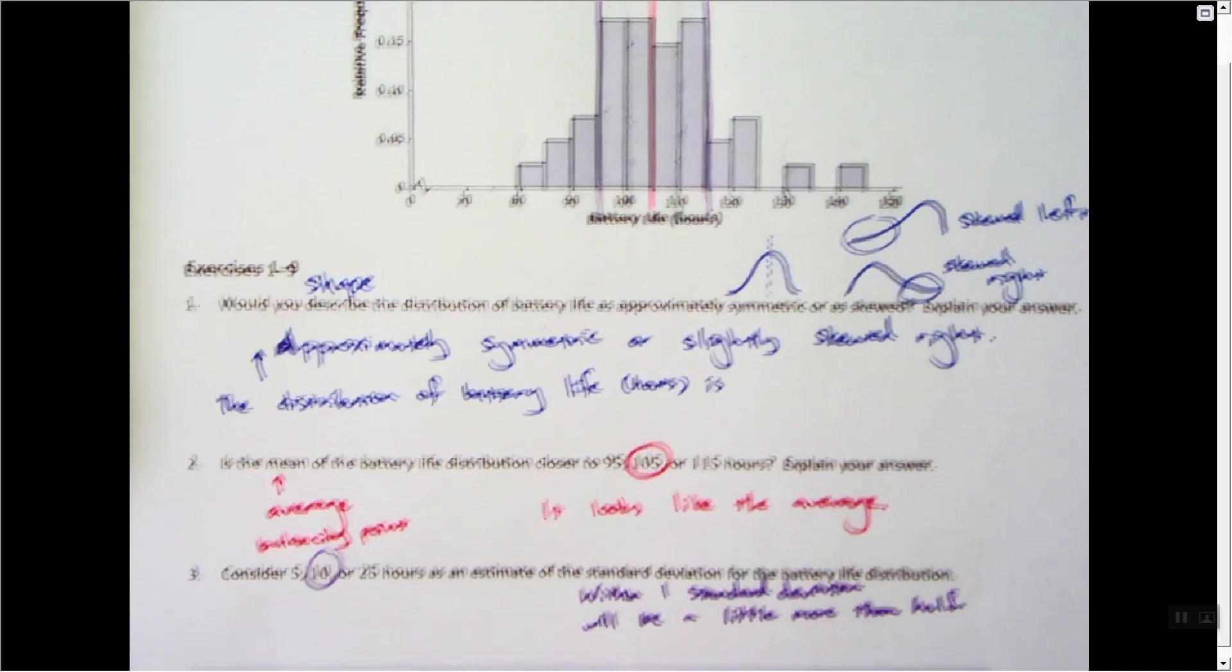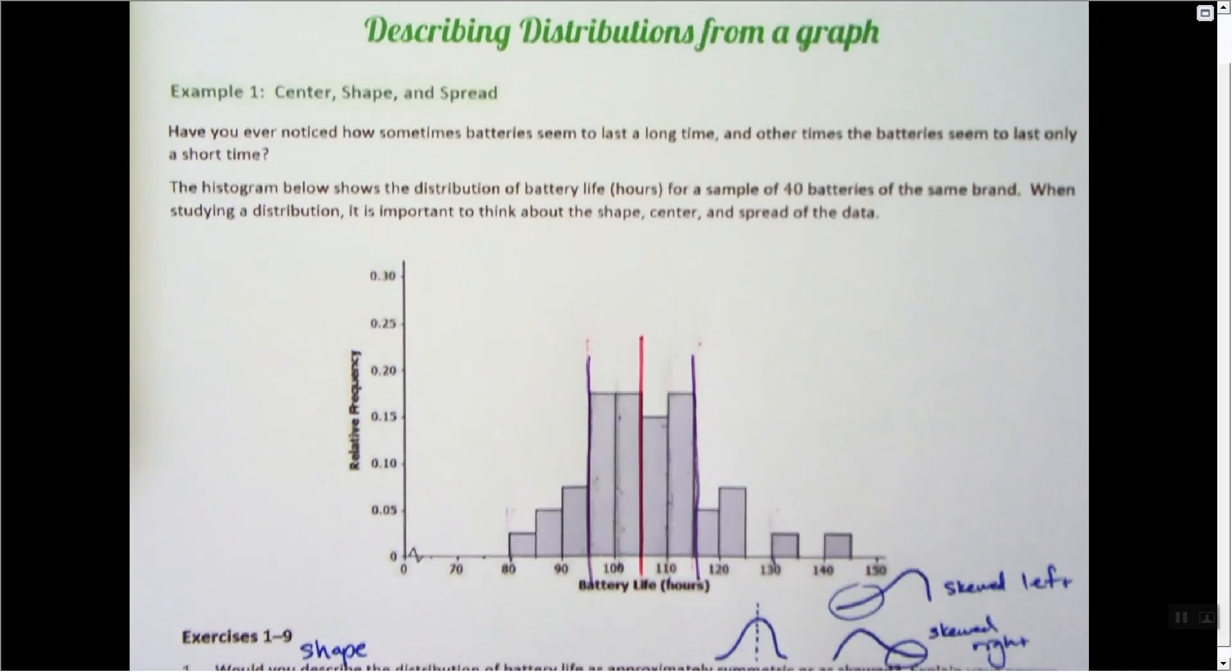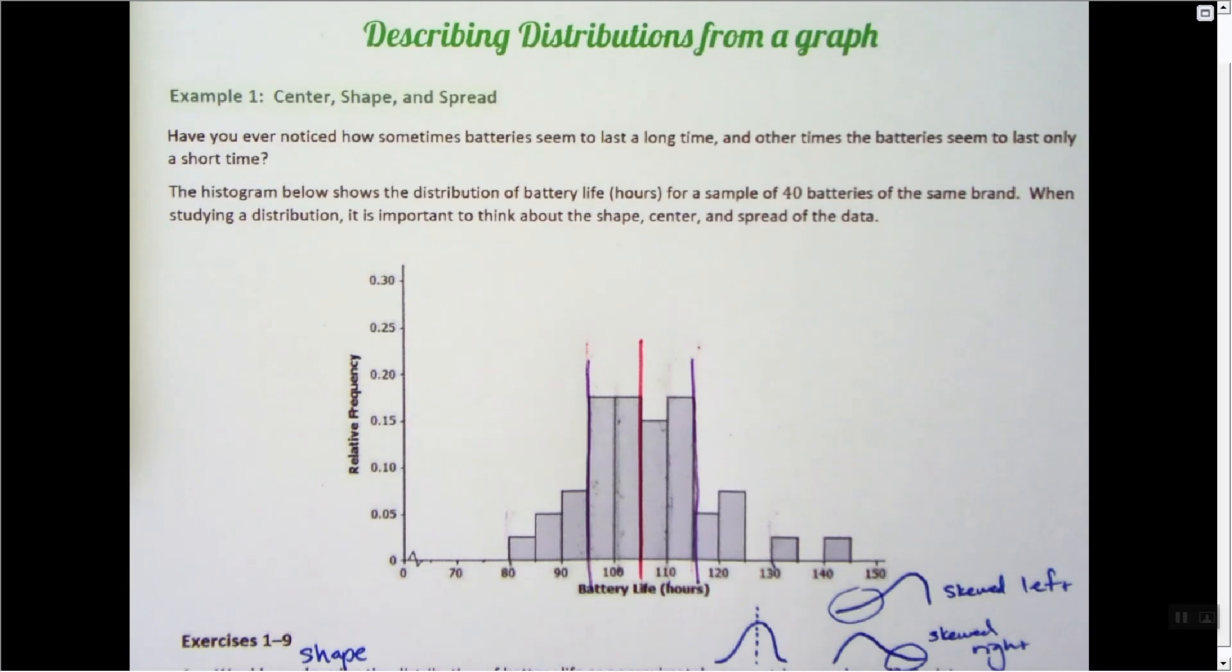So I'm just gonna leave it there. So 10 is a standard deviation for this one. So that is looking at the shape, center, and spread, looking at skewness or symmetry, and then looking at an estimate for the mean and standard deviation.